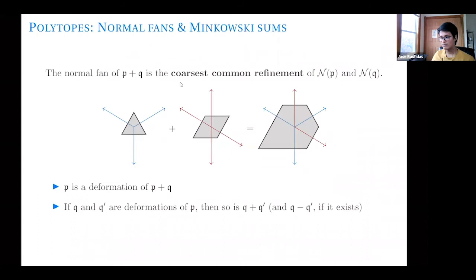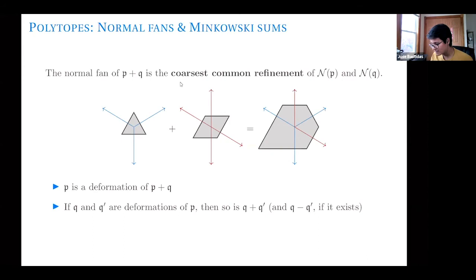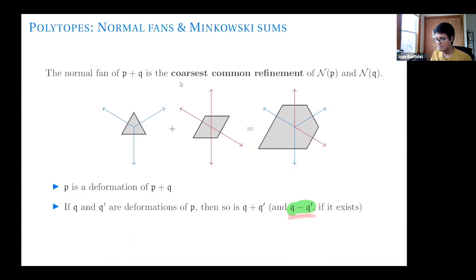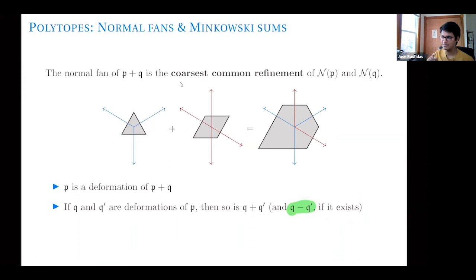Question: what is minus Q'? Does it just change the direction? No. This is not reflecting Q' and taking the Minkowski sum. This is the signed Minkowski sum operation introduced before. If this exists, it means there is a polytope R such that R Minkowski-summed with Q' equals Q. If such a polytope exists, then Q minus Q' equals R. But it doesn't always exist.